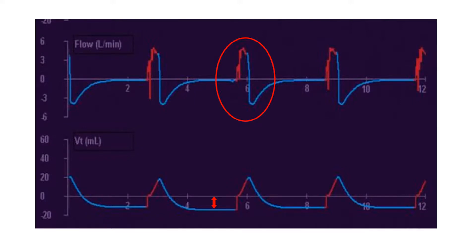Notice right here, we're in flow — this is our flow curve — and then we have tidal volume, and it's showing us this. Your flow waveform is the most sensitive indicator, so anytime it's not a smooth waveform,